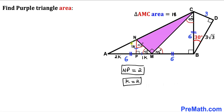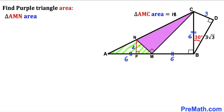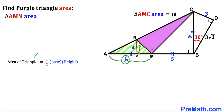Now let's calculate the area of triangle AMN. Using area = ½ × base × height: the base AM is 6 and the height NP is 2 units. So the area of triangle AMN equals ½ × 6 × 2 = 6 square units.